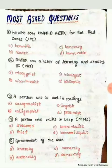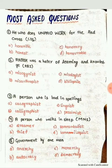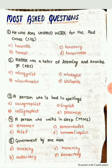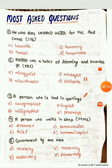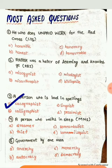Our third question is: A person who is bad in spellings. The options are: A. Cachographist, B. Calligraphist, C. Linguist, or D. Pessimist. The correct answer is A. Cachographist.